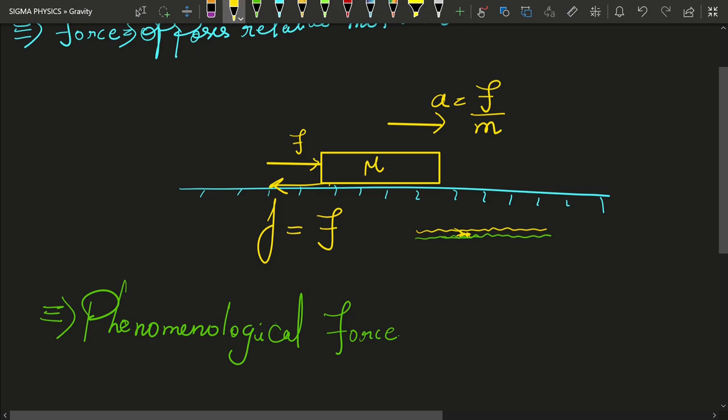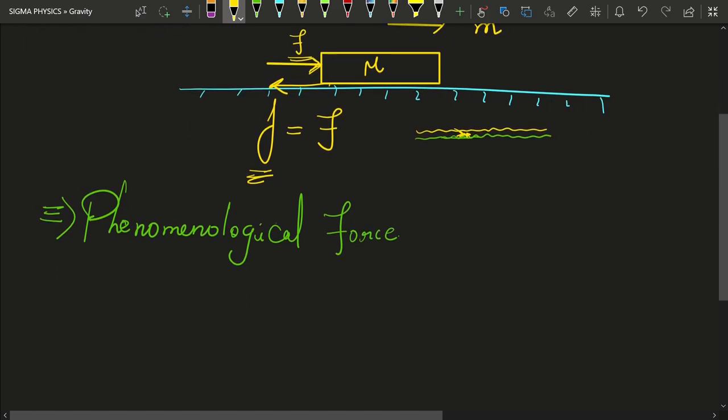Now, if you keep increasing this force F, it is not that the book will never move. There will be a point when this friction will not be able to balance this force and the book will actually start moving. So, this maximum limit, the maximum force which you will have to put on a book before it starts moving is known as static friction.